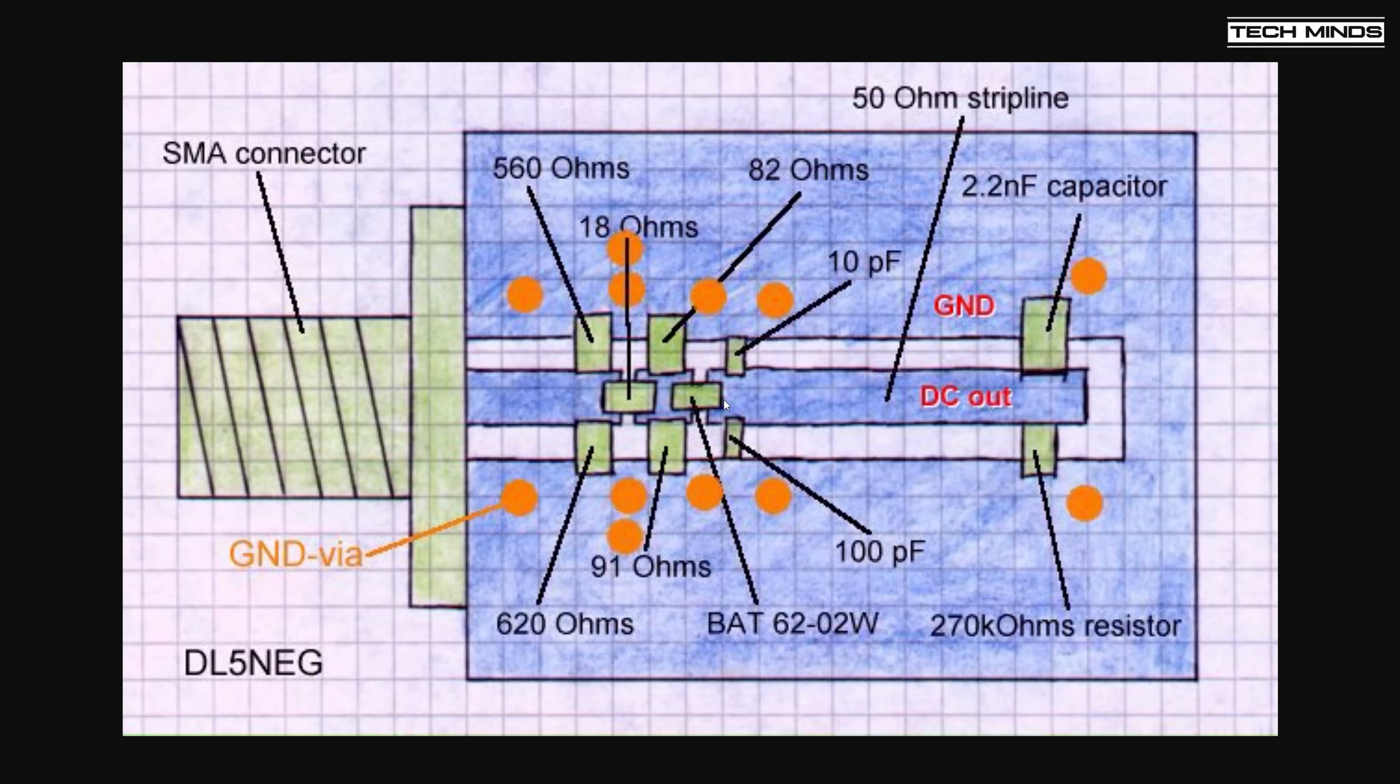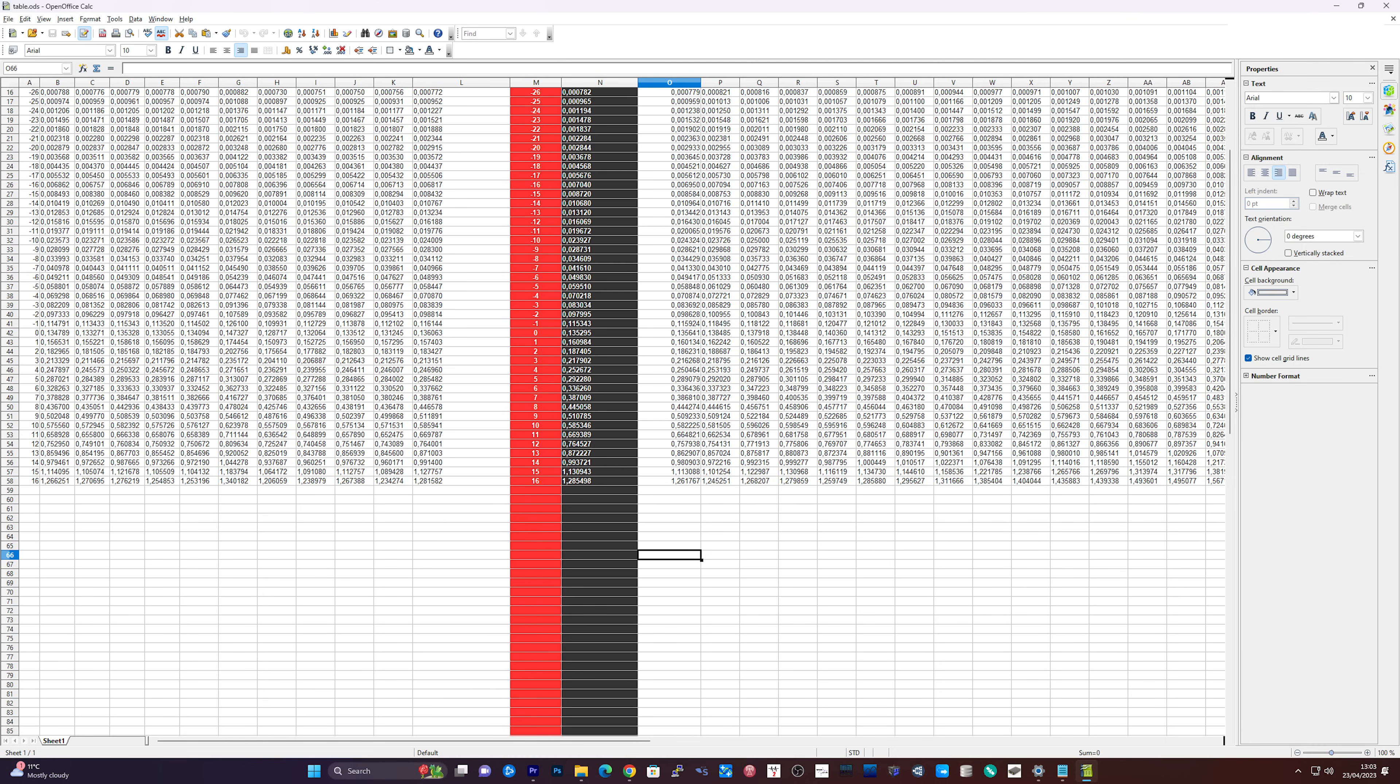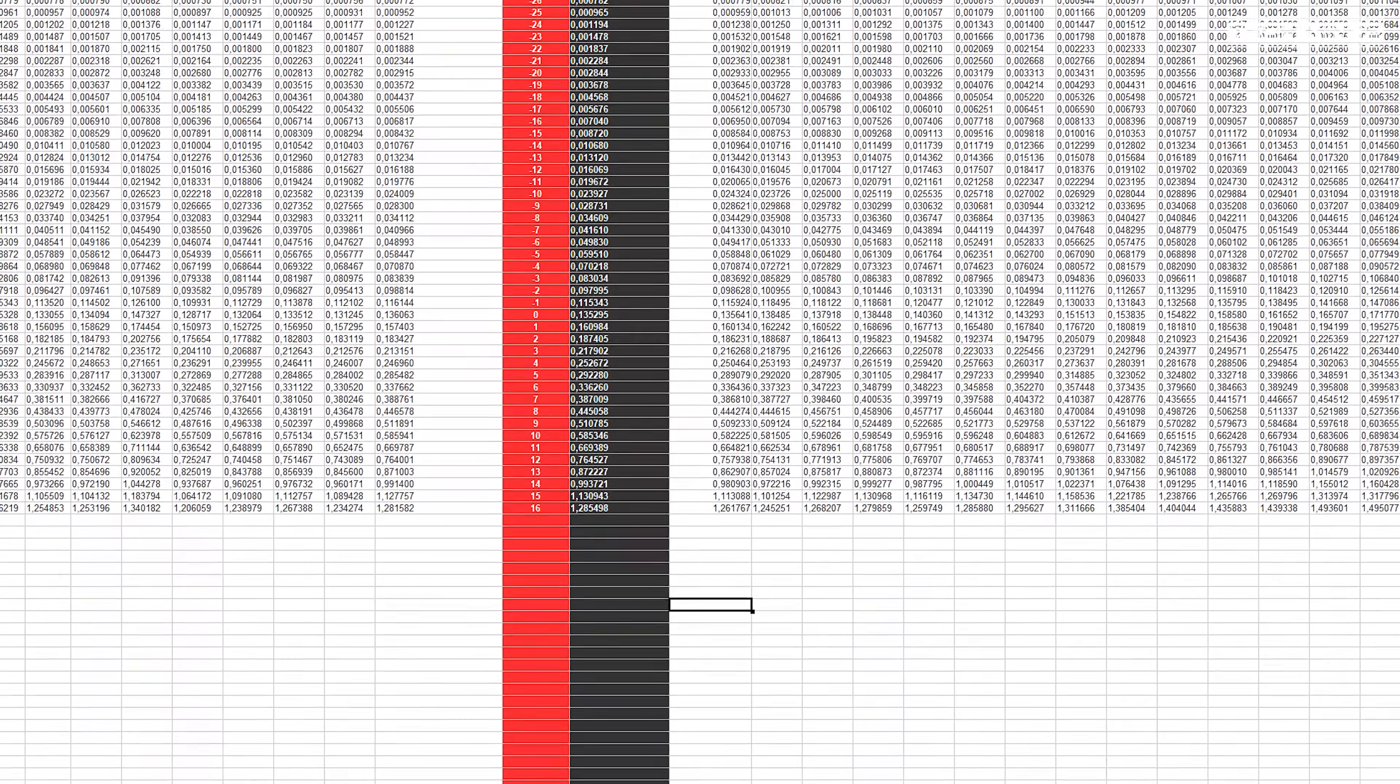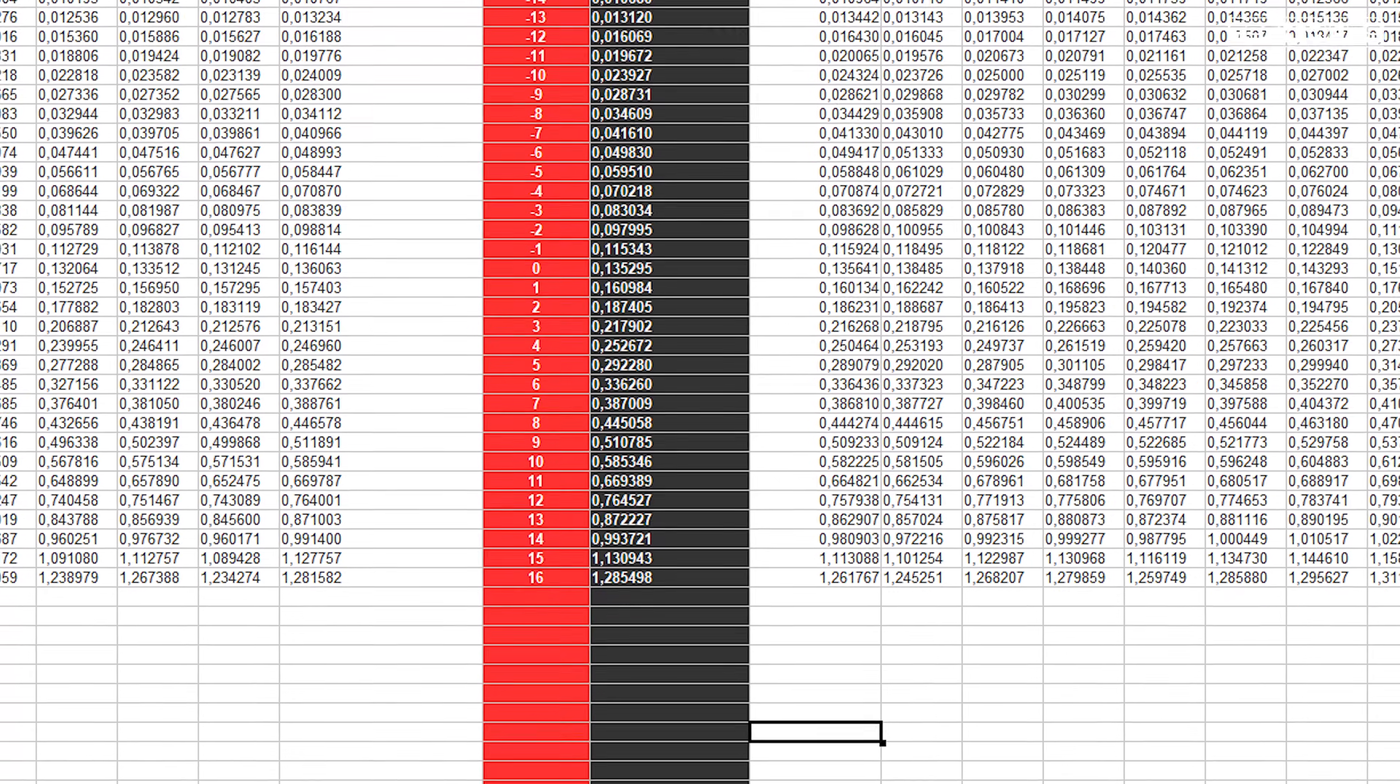DL5NEG has stated that they have made this RF power sensor many times using the components listed on their website, with each build having almost exact same performance. So in theory, if I build this, I should be able to replicate what DL5NEG has achieved. They've provided a nice spreadsheet which covers the output DC voltage to dBm conversion in 200 megahertz increments.